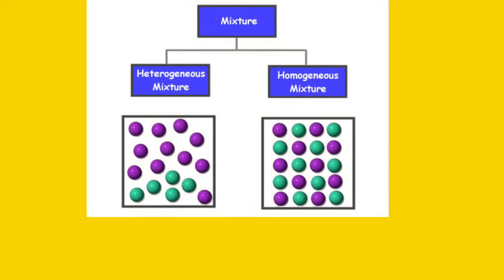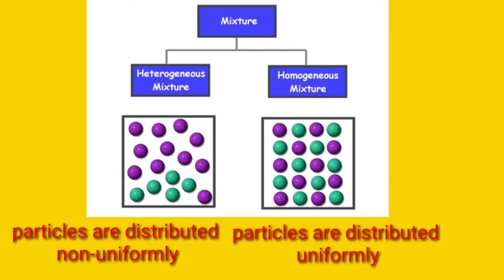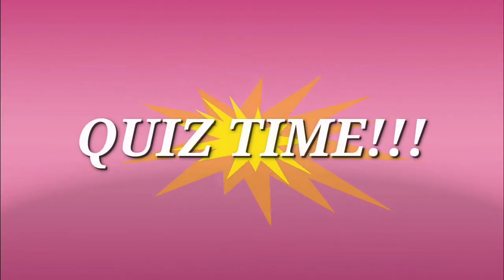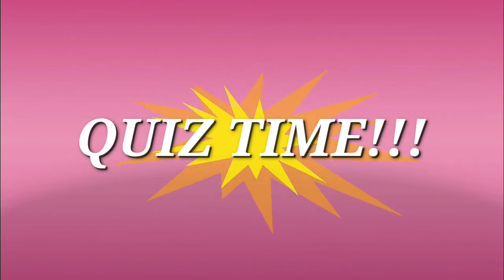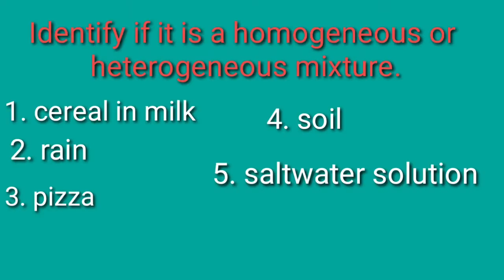The particles of a homogeneous mixture are distributed uniformly, while the particles of a heterogeneous mixture are distributed non-uniformly. Now that you know the difference between the homogeneous and the heterogeneous mixture, it's time for you to take the quiz. Identify if it is a homogeneous or heterogeneous mixture.